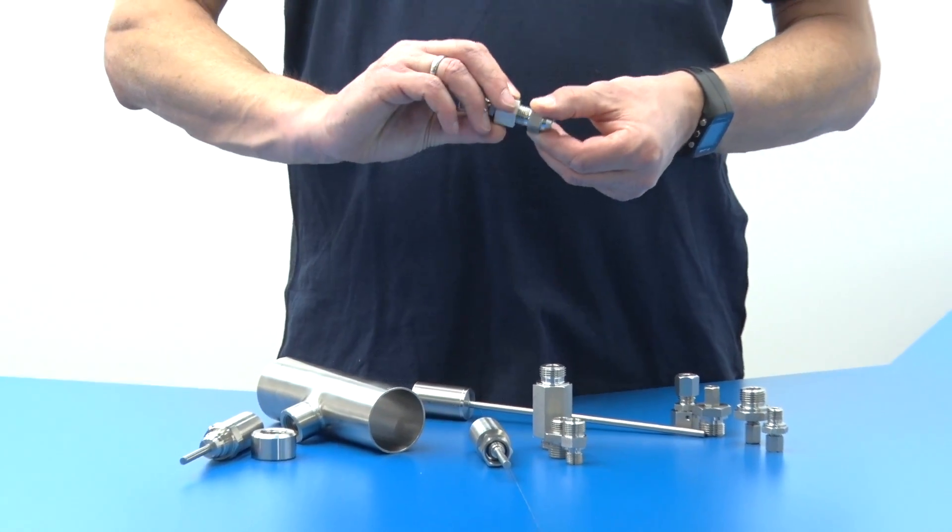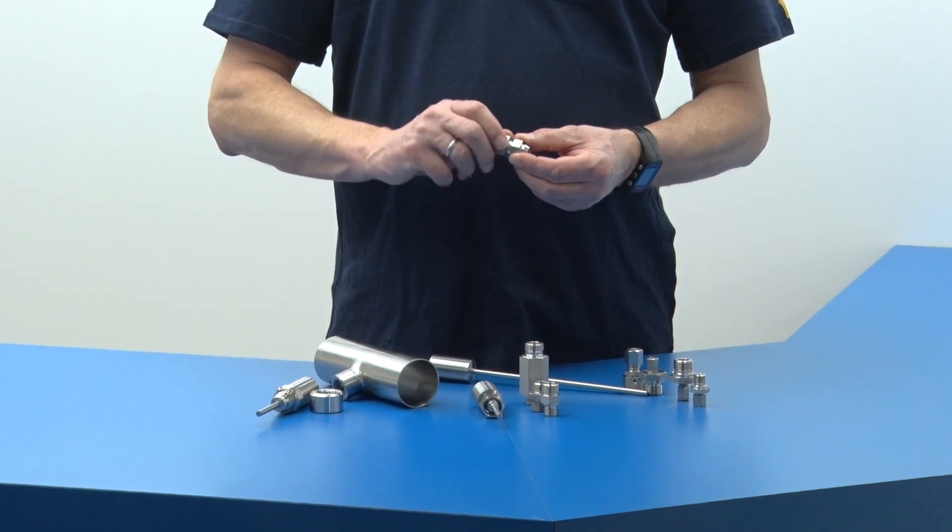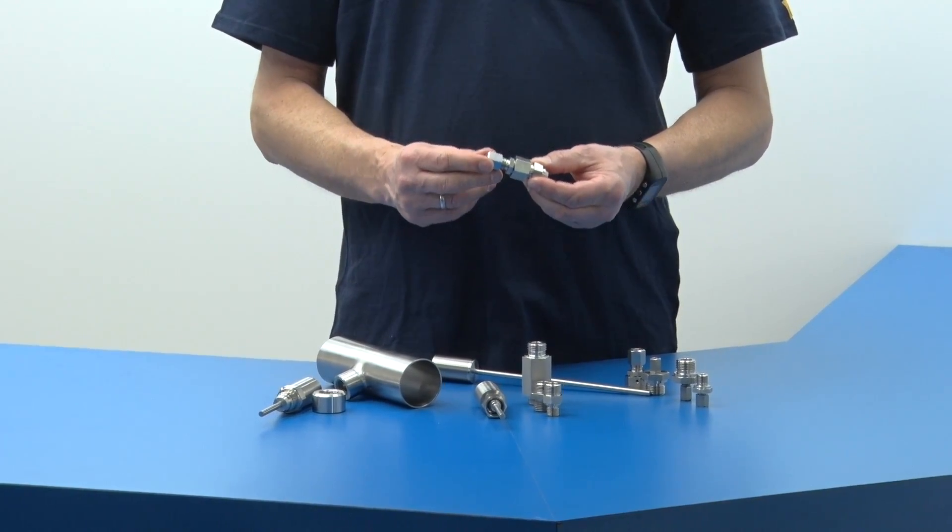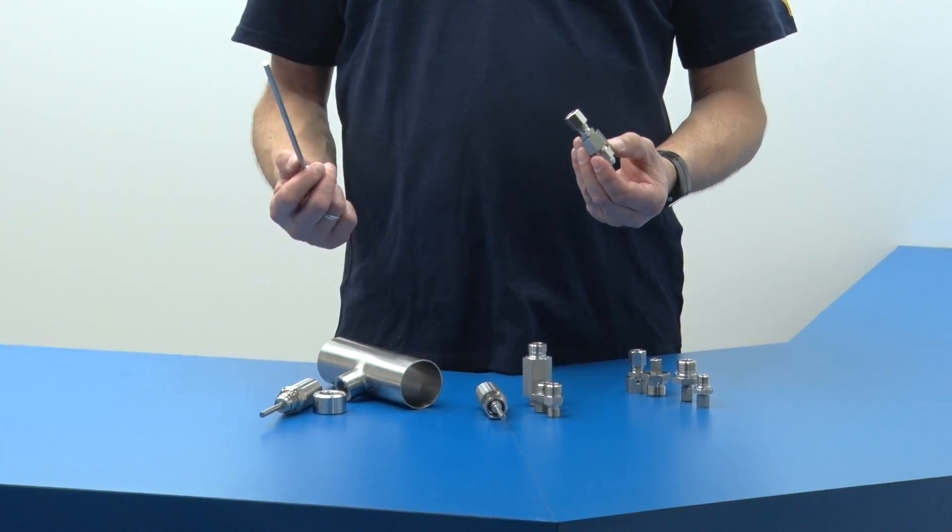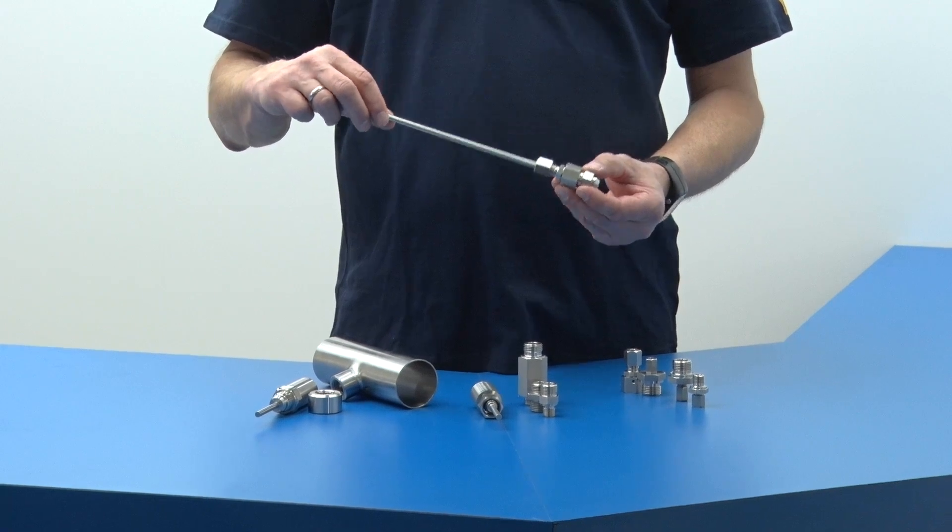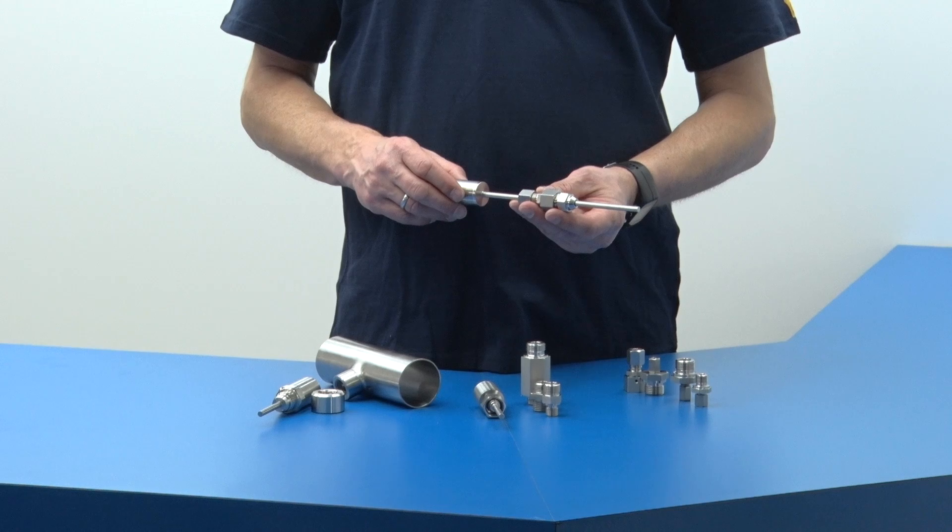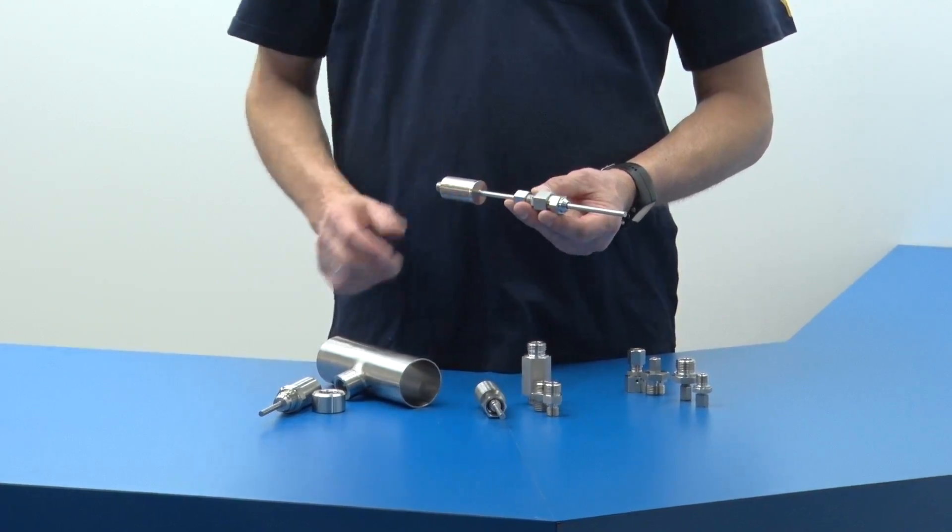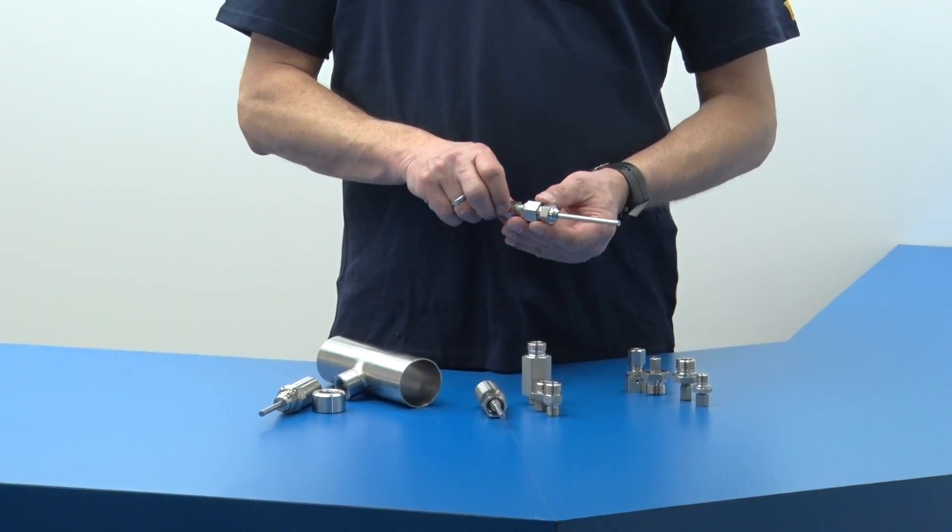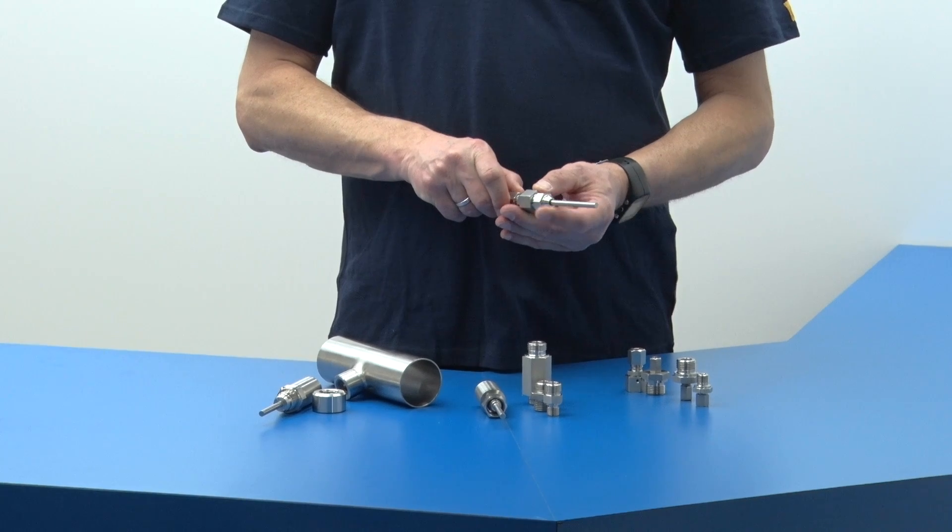Just screw the adapter onto the sealing cone and the connection is tight. As you can see, the sliding sensor can be even installed as a retrofit for optimum sensor position in any pipe diameter. So much for the sliding sensor variant.